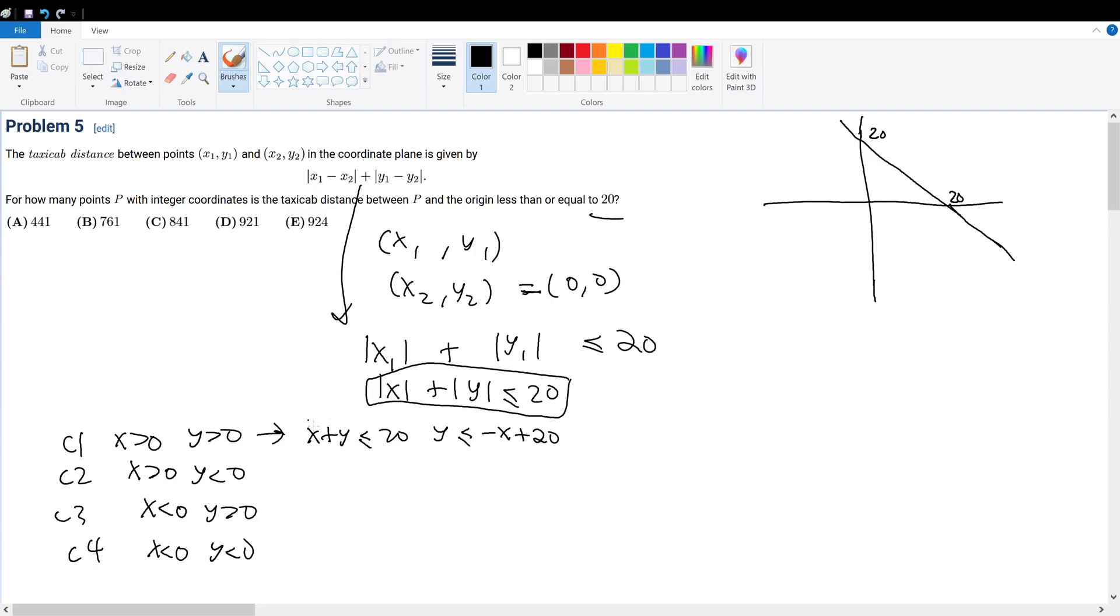We also know for this second case, x is larger than 0, so it's positive x, but y is less than 0. This minus y is less than or equal to 20. Therefore, y must be greater than or equal to x minus 20. x minus 20 looks something like this, and then we know that this is negative 20.